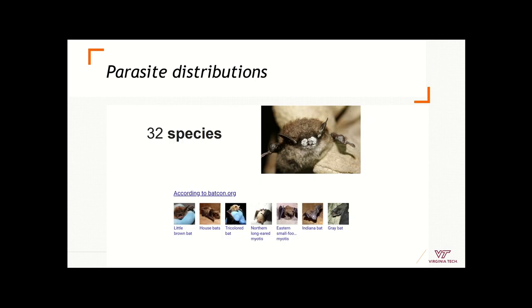Another example is the fungus causing white-nose syndrome in bats. We know it's found in bats, but not in all bat species. In North America, there are 32 species of bats, and from these 32 species, only seven are successfully colonized by this parasite. This shows again that there could be some special features of the host that make them more suitable to the parasite than others.